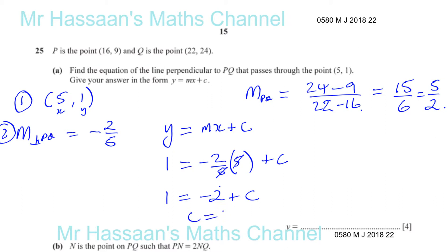So you end up with y equals negative 2 fifths x plus 3. That's the form they want the equation in: y = mx + c.